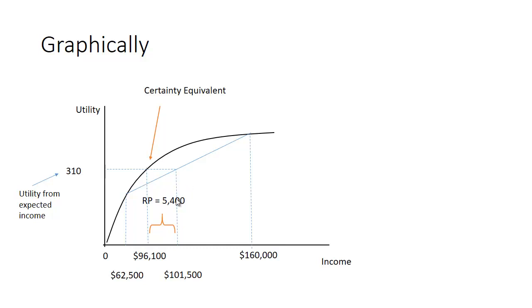And by solving for this risk premium, we're back here on this utility function. Remember, here this is expected value. On the utility function, this is with certainty.